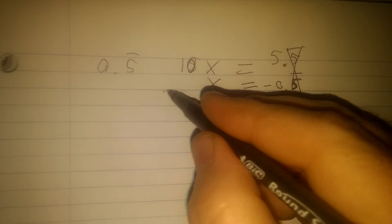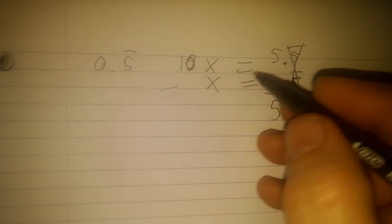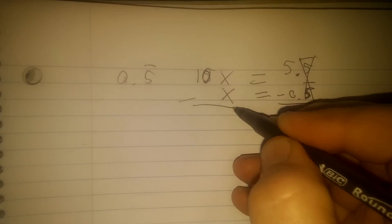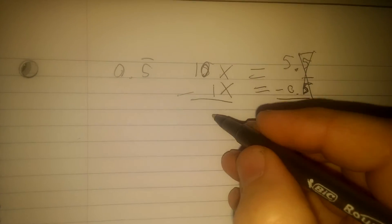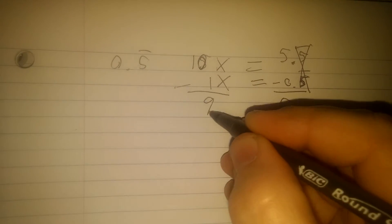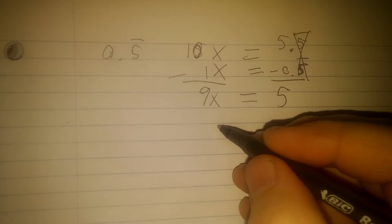Over here, I'll subtract as well since 10x equals that and x equals that. 10x minus x, that's 10x minus 1x, so I'm left with 9x, and 9x will equal 5.